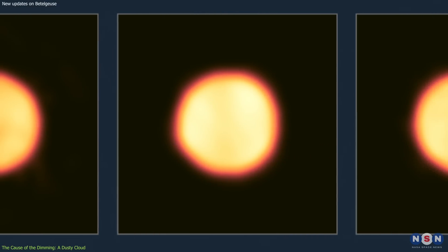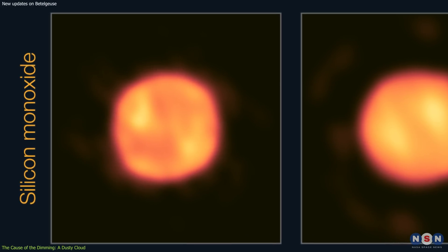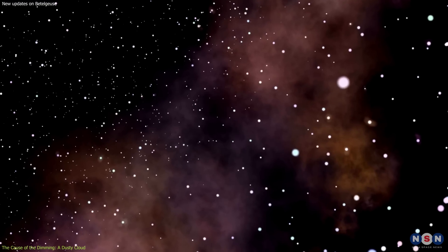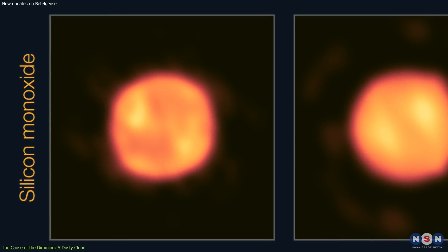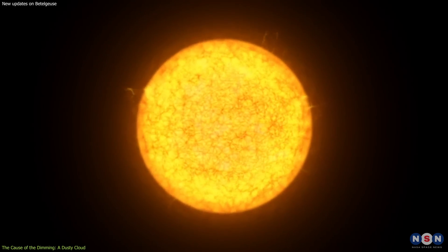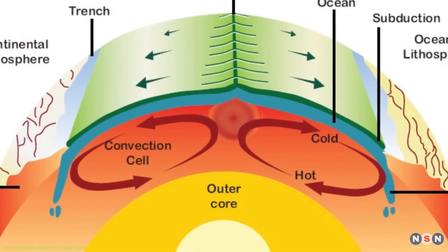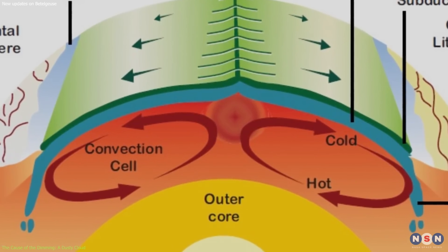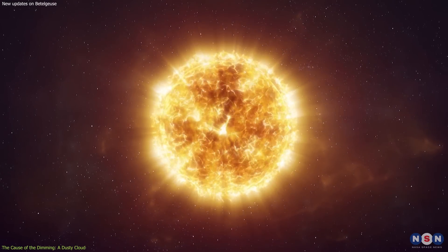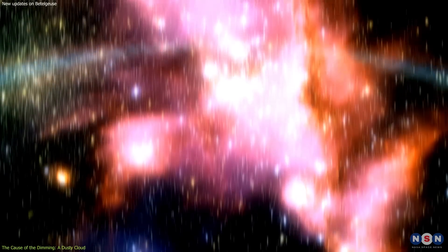The images show that Betelgeuse's photosphere, or visible surface, was partially obscured by a cloud of dust that formed from silicon monoxide molecules. This molecule can form dust grains when it cools down in space. The dust cloud was likely ejected by a large convective cell on the star's surface, which is a result of Betelgeuse's pulsations and instability. A convective cell is a region where hot gas rises and cold gas sinks, creating a circular motion that transports energy and material. Betelgeuse has huge convective cells that can cover up to half of its surface at a time. These cells can also create shock waves that push out gas and dust from the star.